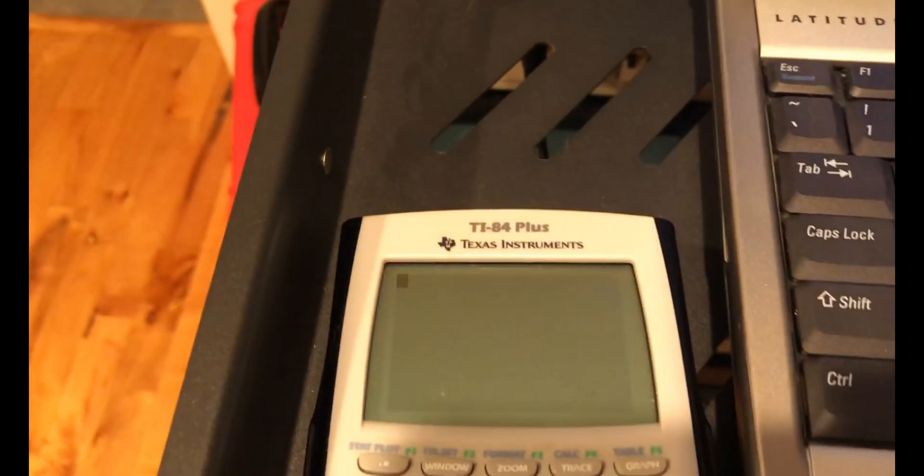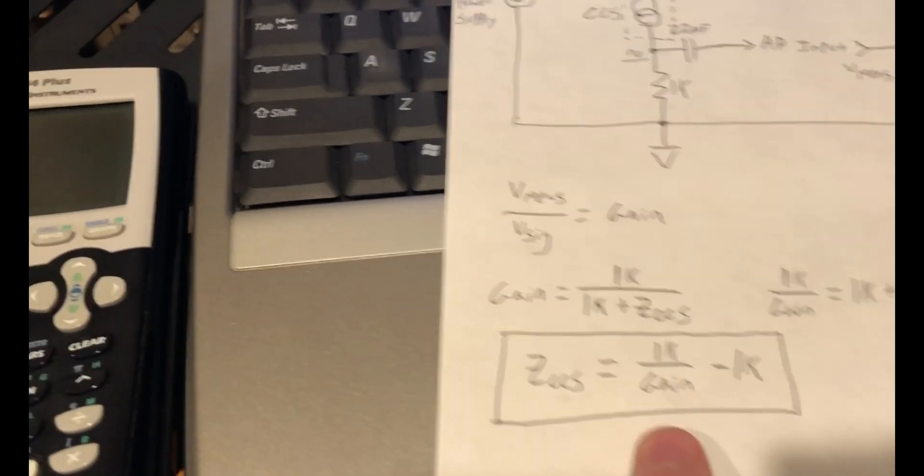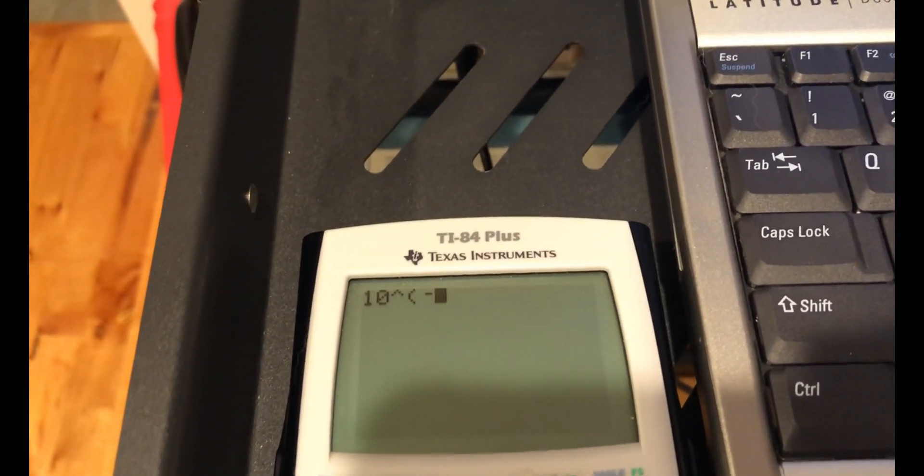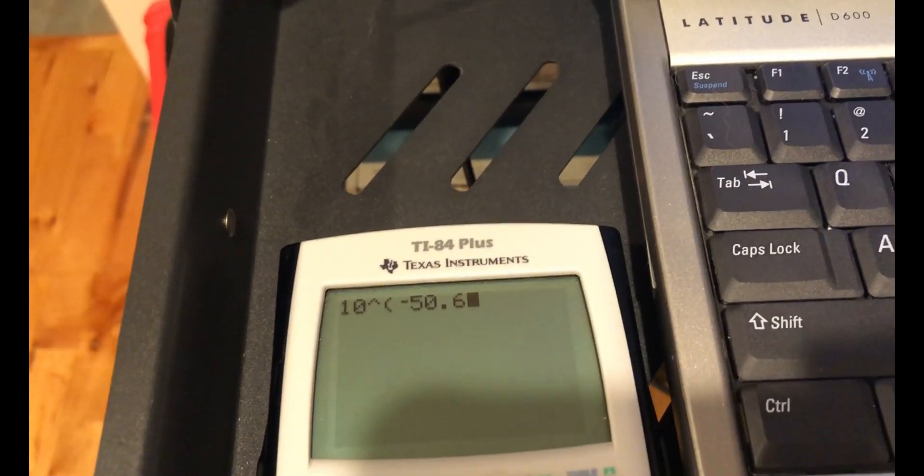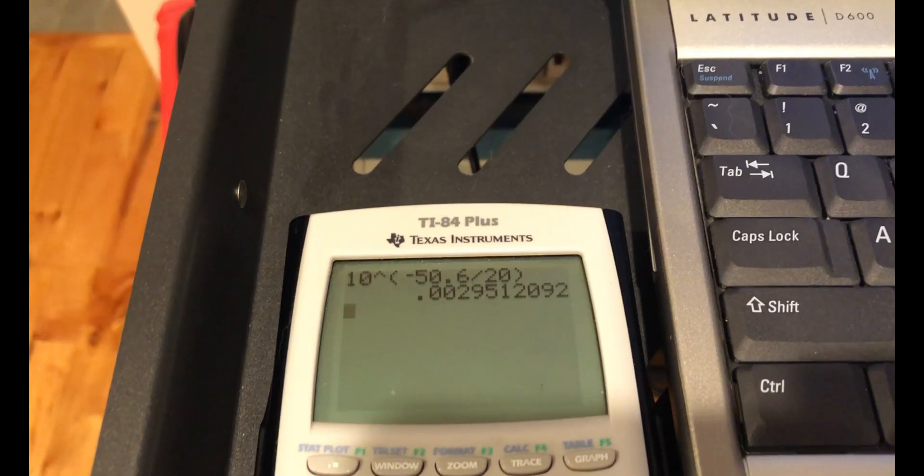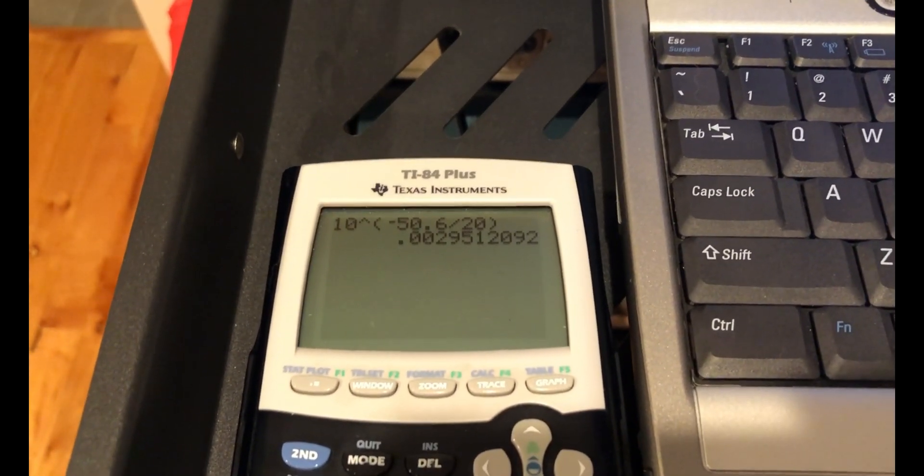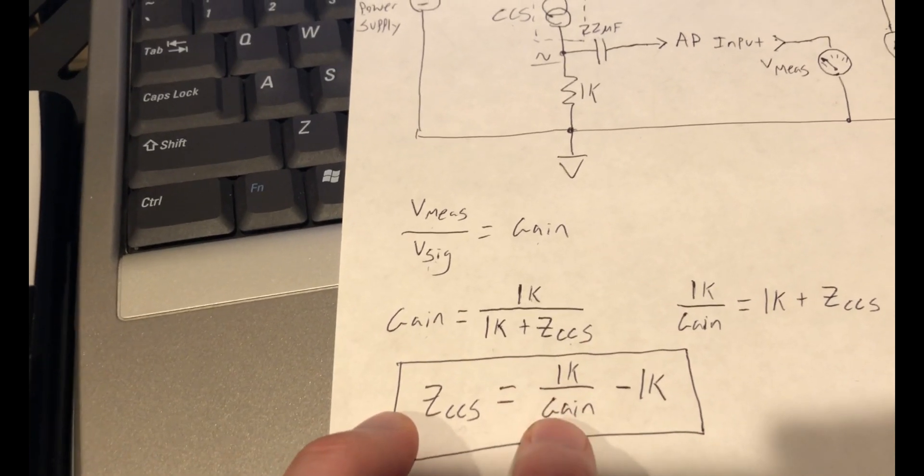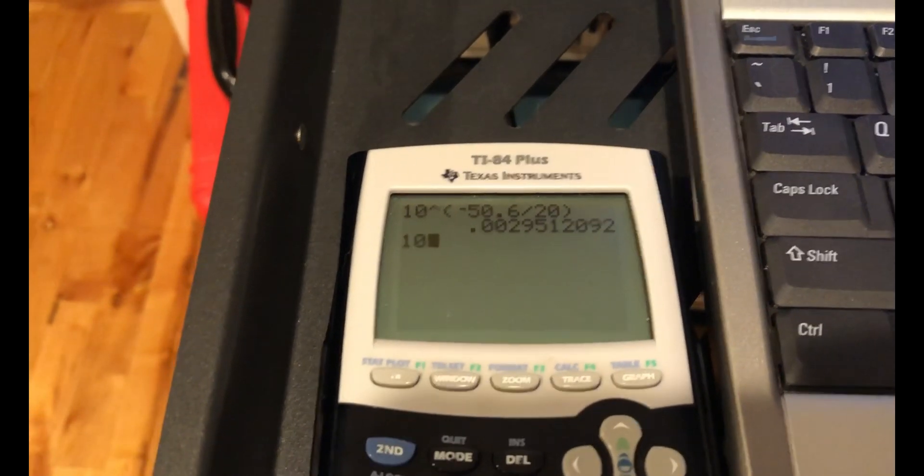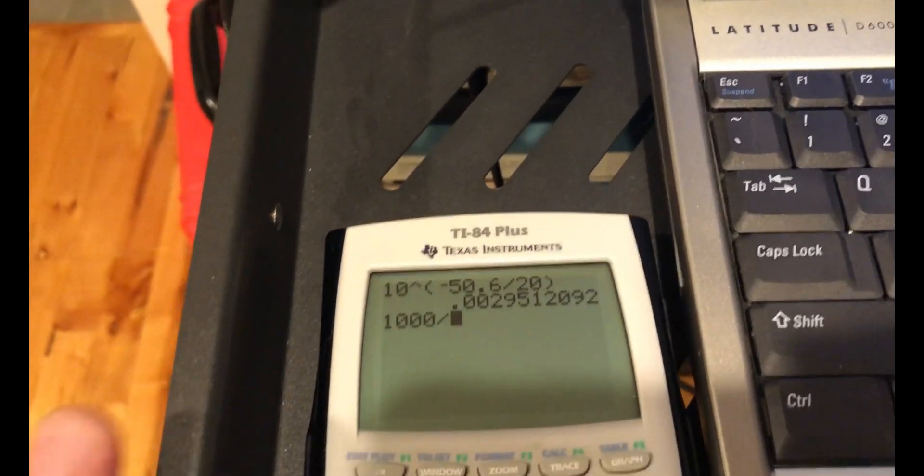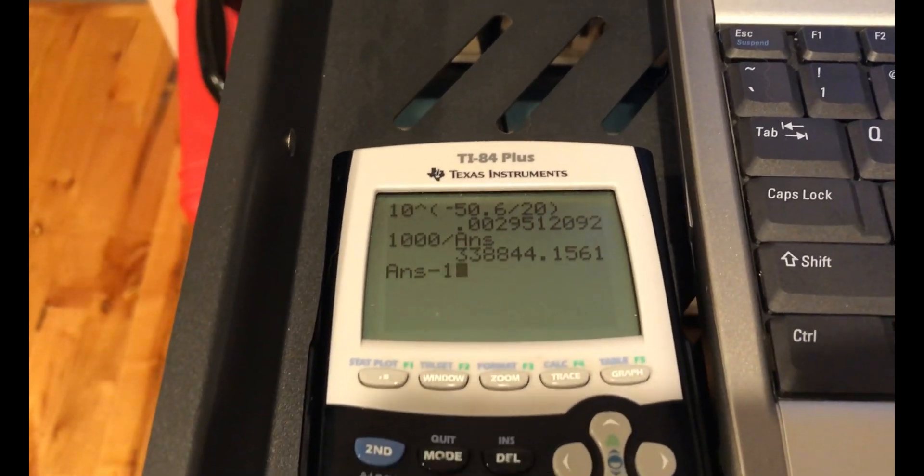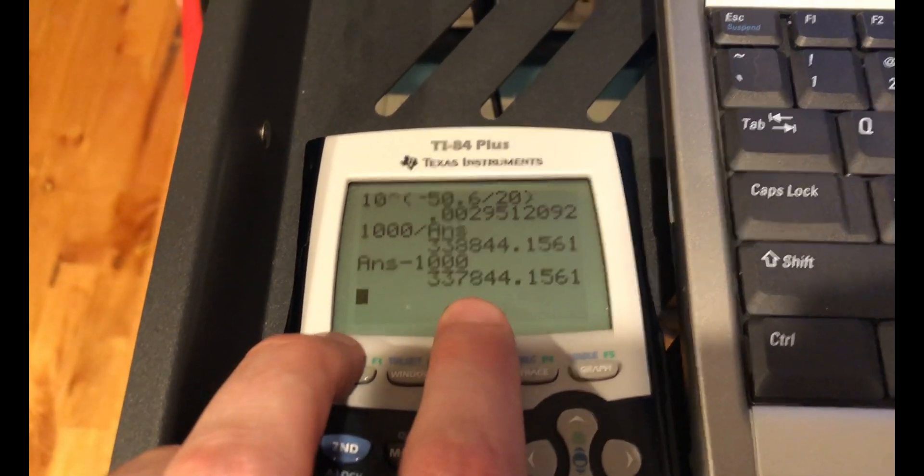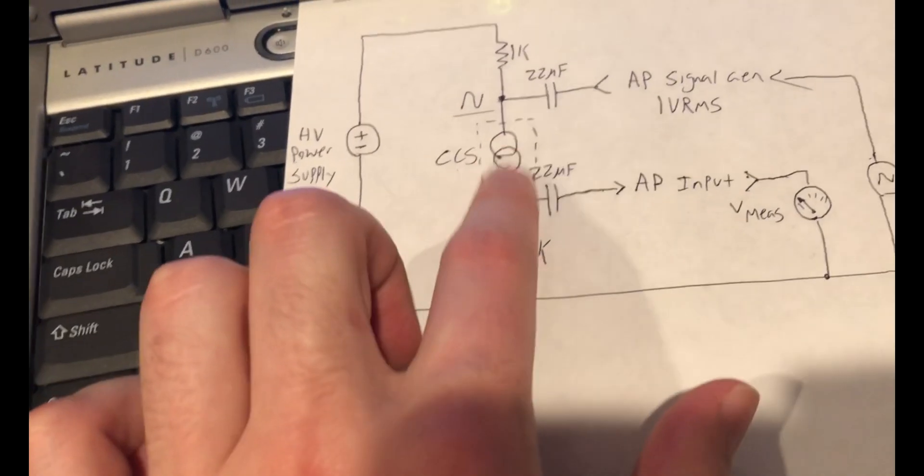So if I move to the calculator and use the gain equation we established earlier, I need to convert the dB into a linear gain. So 10 raised to the minus 50.6 dBs divided by 20, that's the gain. So we need to take 1 kilo ohm, divide it by that gain number, and then minus 1 kilo ohm. 1k divided by the answer, minus 1 kilo ohm. 337.8 kilo ohms. That's the impedance of our constant current source.